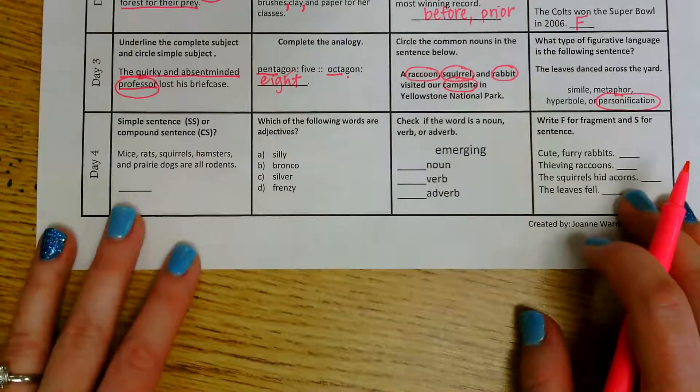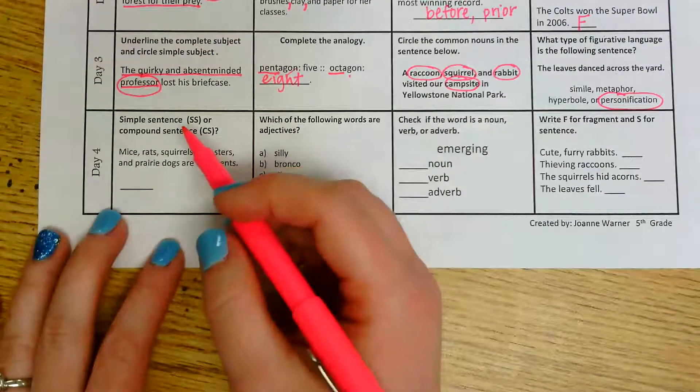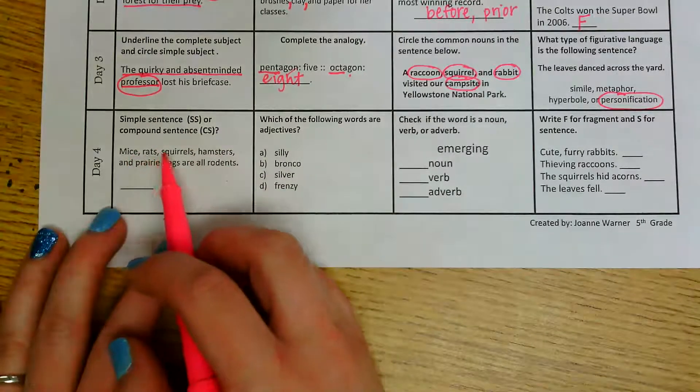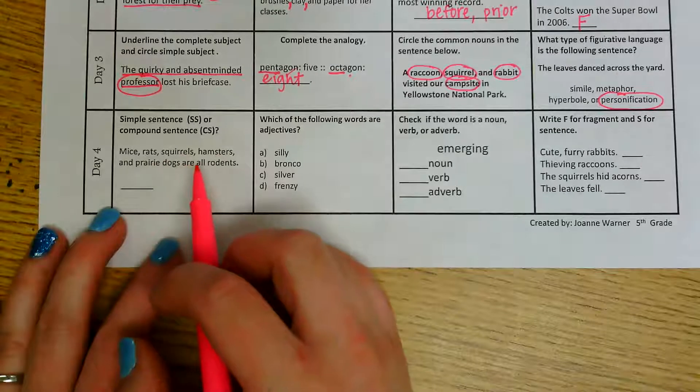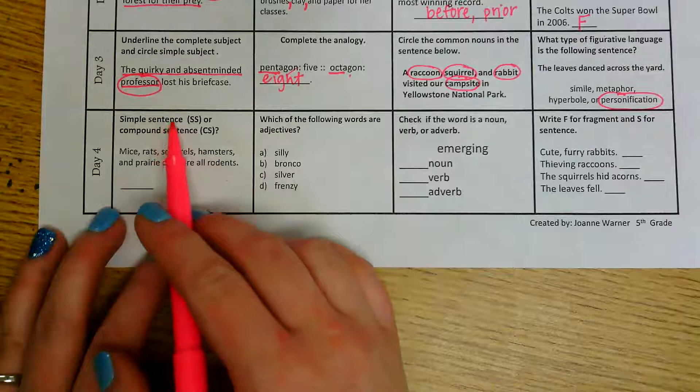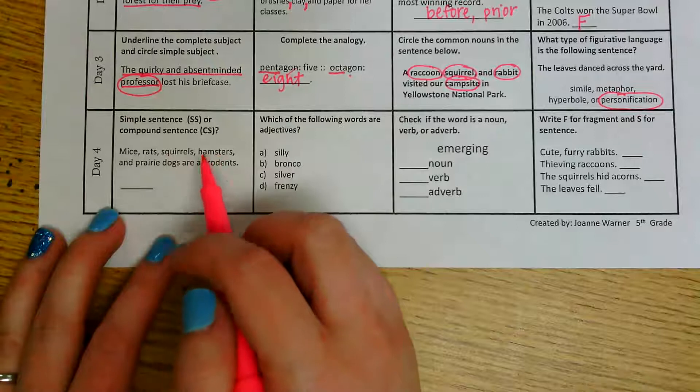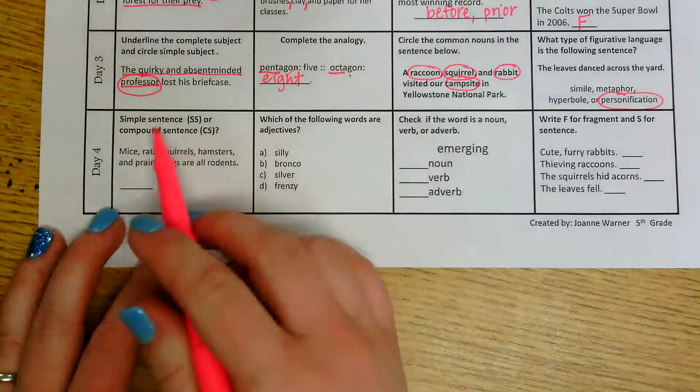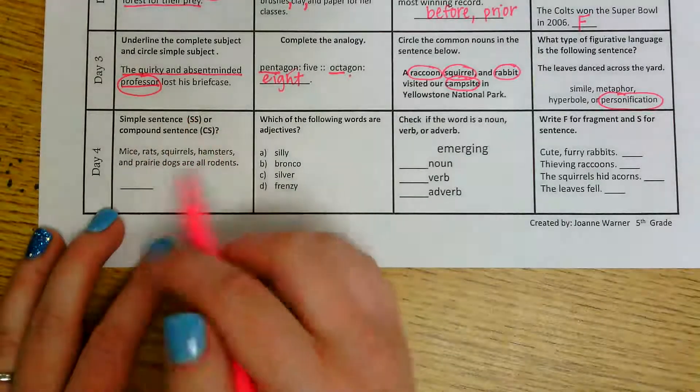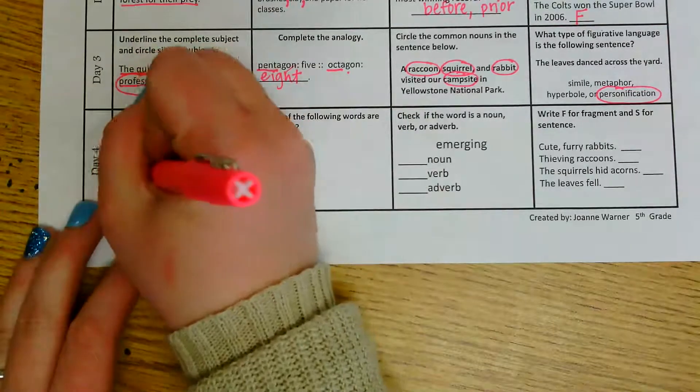In day four, so this is what we should have done Thursday. The first one asks us simple sentence or compound sentence. Mice, rats, squirrels, hamsters, and prairie dogs are all rodents. Well, I know that if I have a simple sentence, I'm just going to have a subject and a predicate like normal. There's not going to be a whole lot of additional information. However, a compound sentence is going to be like combining two sentences into one. So looking at this information, this would be an example of a simple sentence.